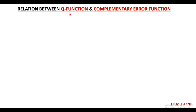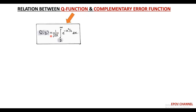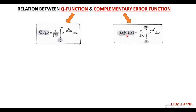Welcome once again. In this session, we are likely to discuss the relationship between Q-function and complementary error function which we have already discussed in last video lectures. The Q-function Q(y) equals 1 upon √(2π) times the integral of e^(−x²/2) dx from y to infinity, and the complementary error function is denoted as 2 upon √π times the integral of e^(−u²) du from x to plus infinity.